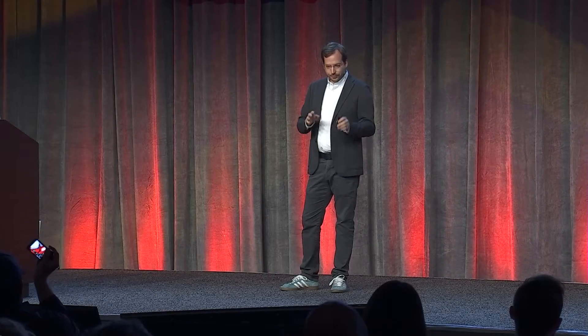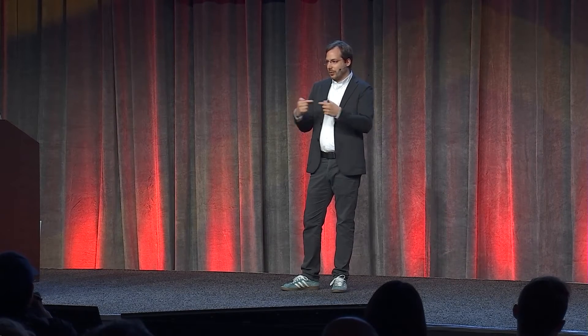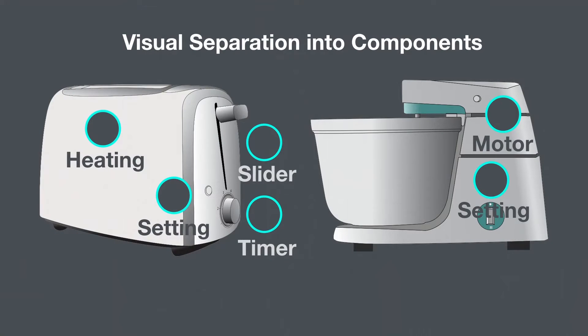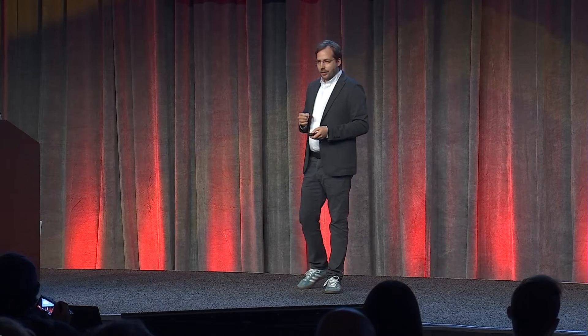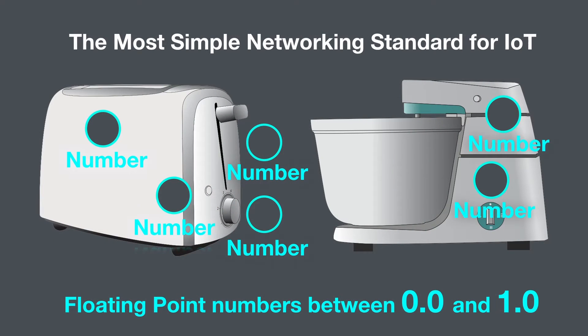This is where augmented reality in combination with a bidirectional link with the physical world becomes very powerful. A company right now needs to think about standards between IoT at a very abstract layer — knowing everything a toaster can be, everything a food processor can be, then creating a standard for how they communicate. But with augmented reality, an interesting trick happens: you can approach an object and it breaks down into all of its components. Suddenly I don't have an abstract standard anymore — I can see a heating unit, a setting knob, a slider, a timer on the toaster, and a motor and settings on the food processor. The simplest standard is just sending simple number values from A to B.